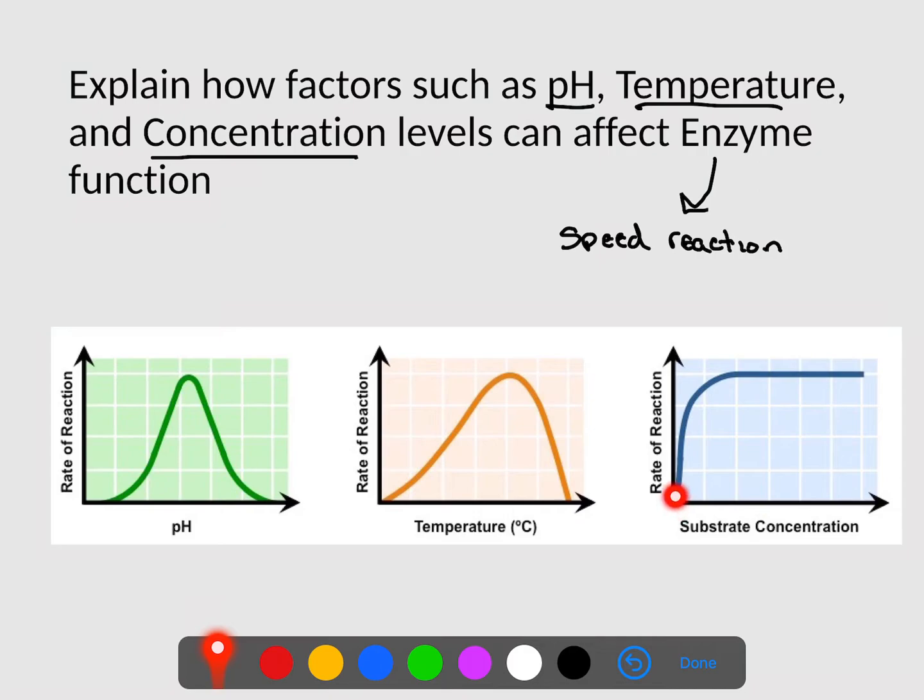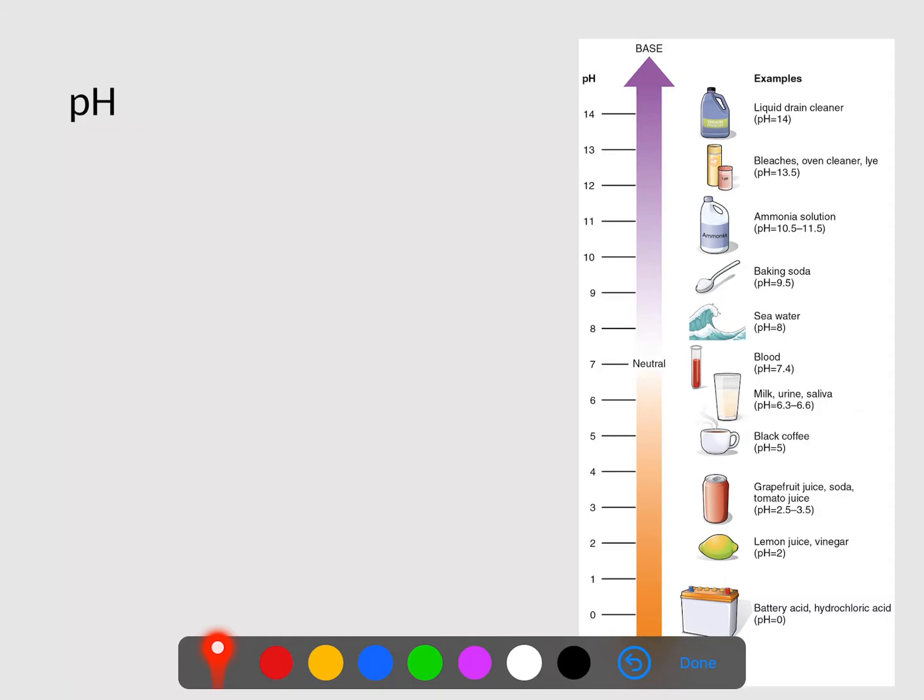And the same thing with substrate concentration. The more substrate or the more things that are doing the chemical reaction, as they increase, eventually they get to a point where the enzymes can't manage them fast enough and kind of steady off. So let's talk about each one of these a little more in depth.